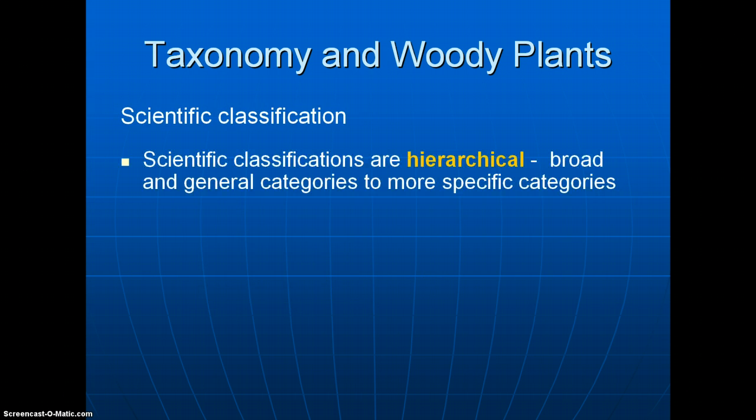Once the classification scheme is constructed, it is hierarchical. You start out with a large, broad category of plants, and then you go down from there, getting finer and more specific categories, until you finally get down to the individual plant species.